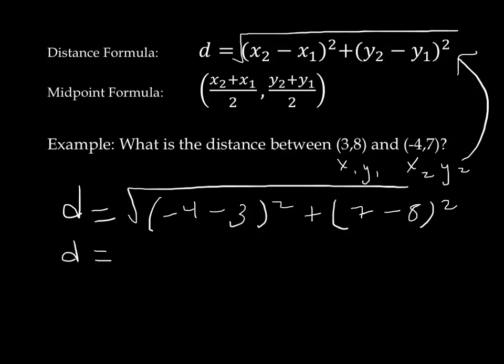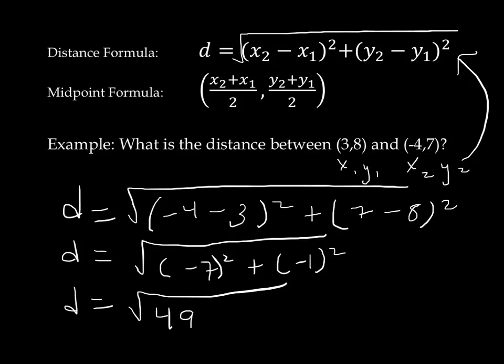And when I go to calculate this, I do the work in the brackets first. So we end up with negative 7 squared, and negative 1 squared. And remember that when we're squaring negative numbers, we'll always end up with a positive. So negative 7 squared gives me 49, and negative 1 squared gives me 1, which is the square root of 50.